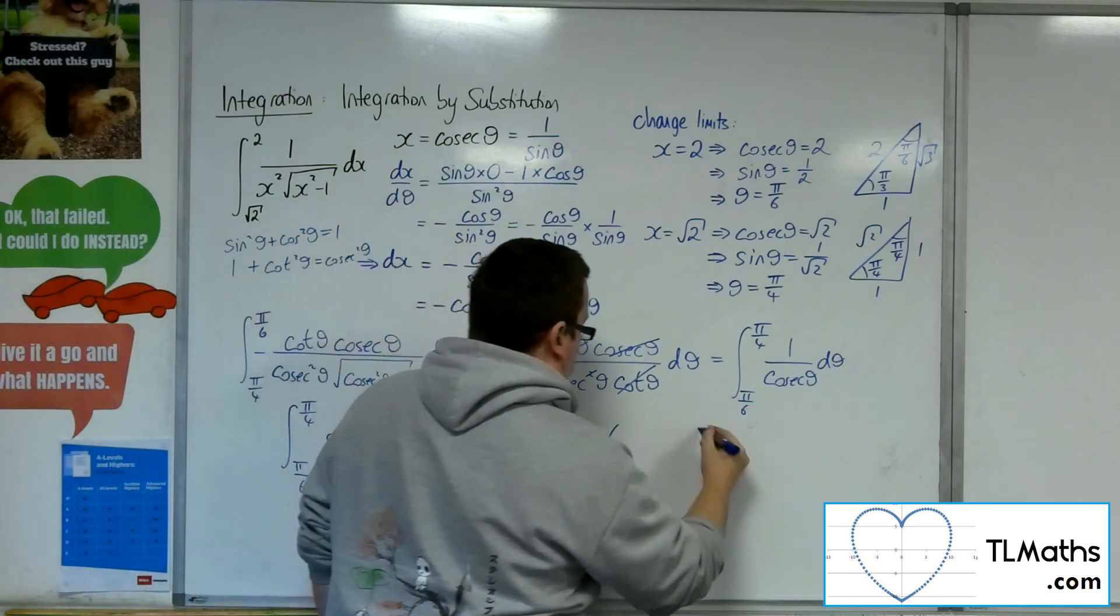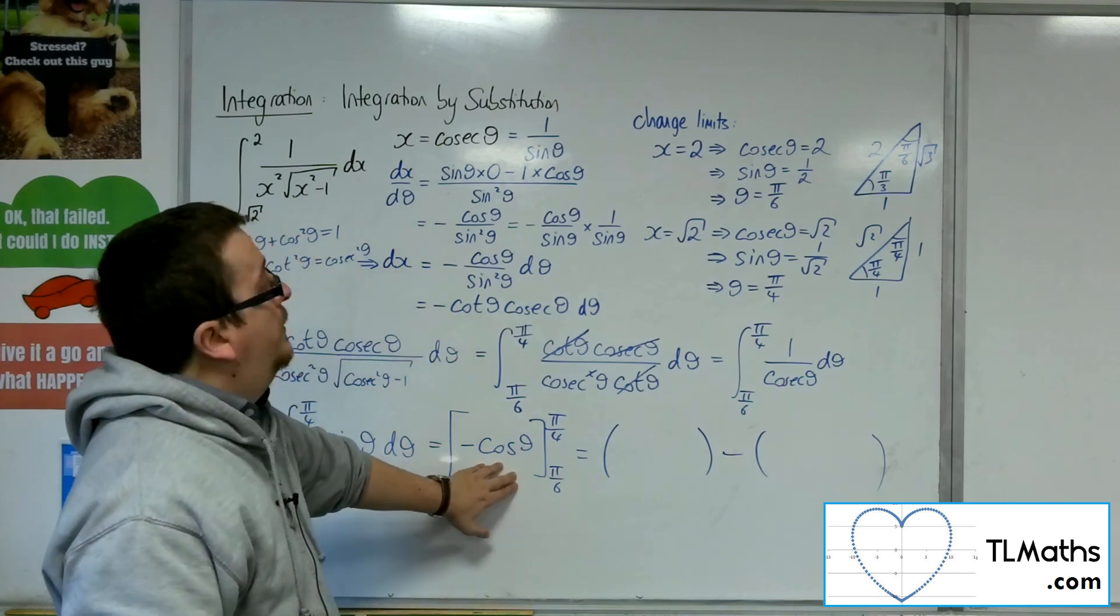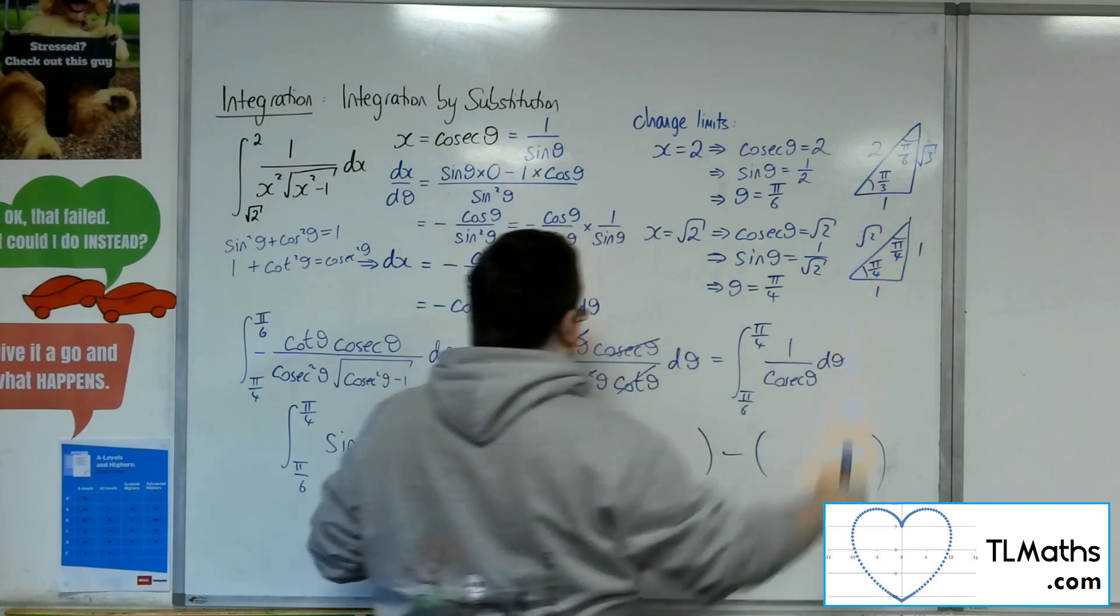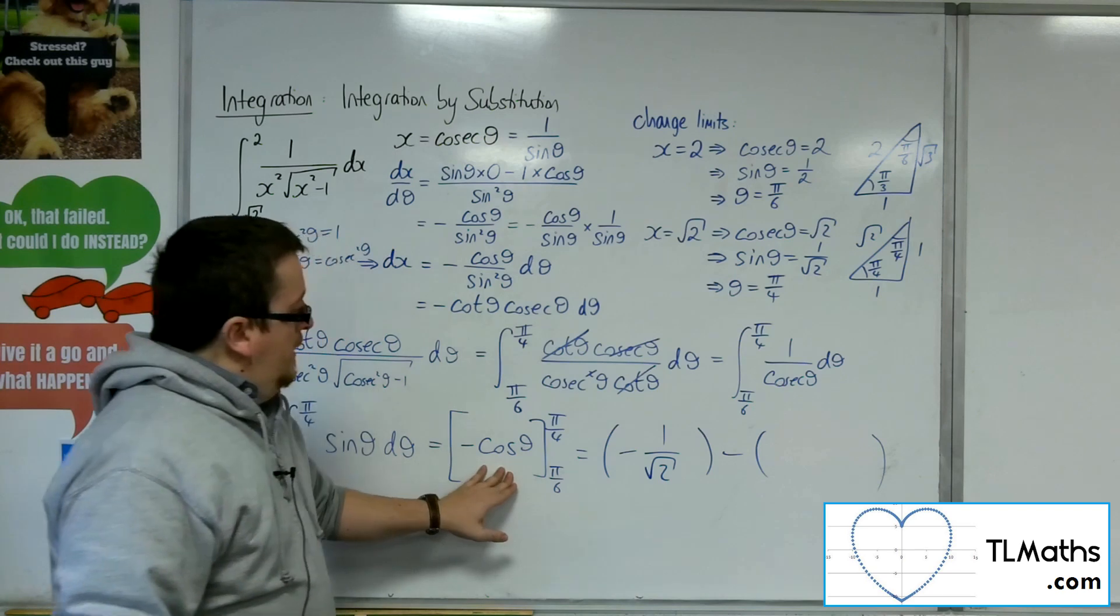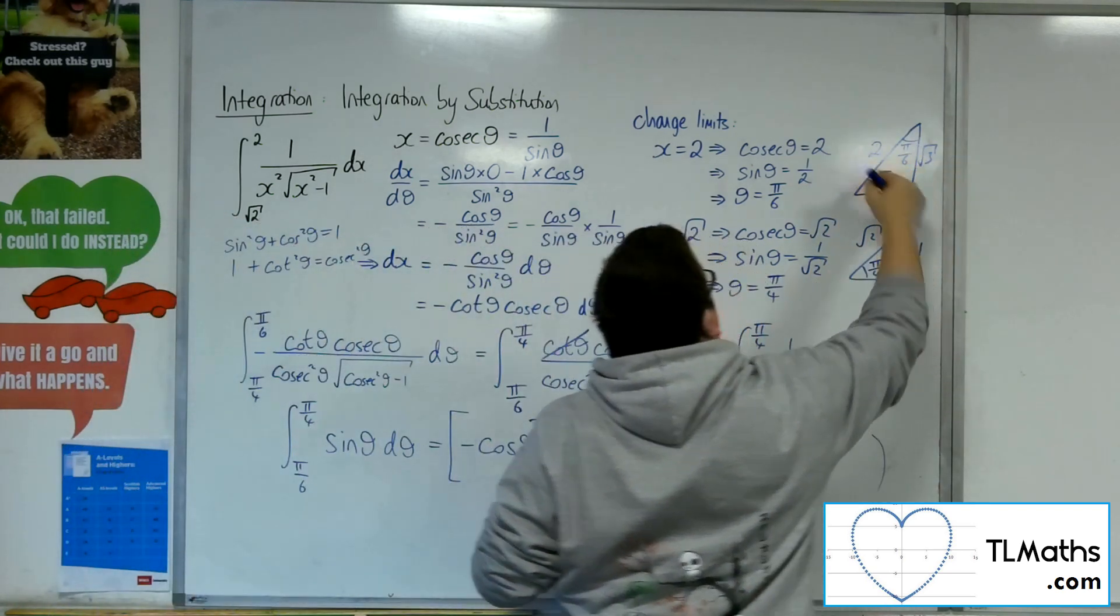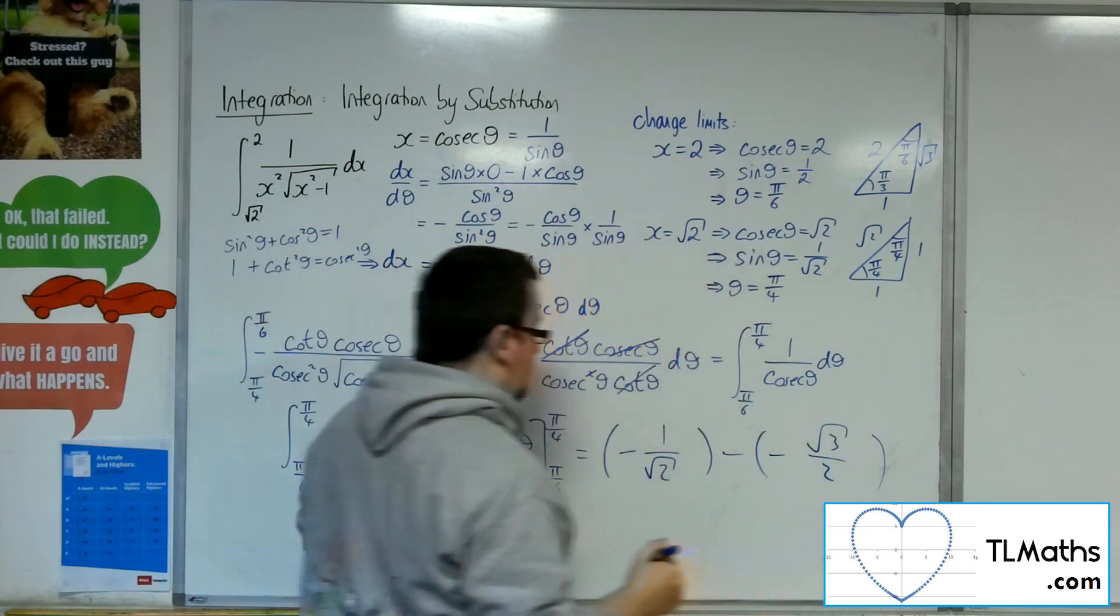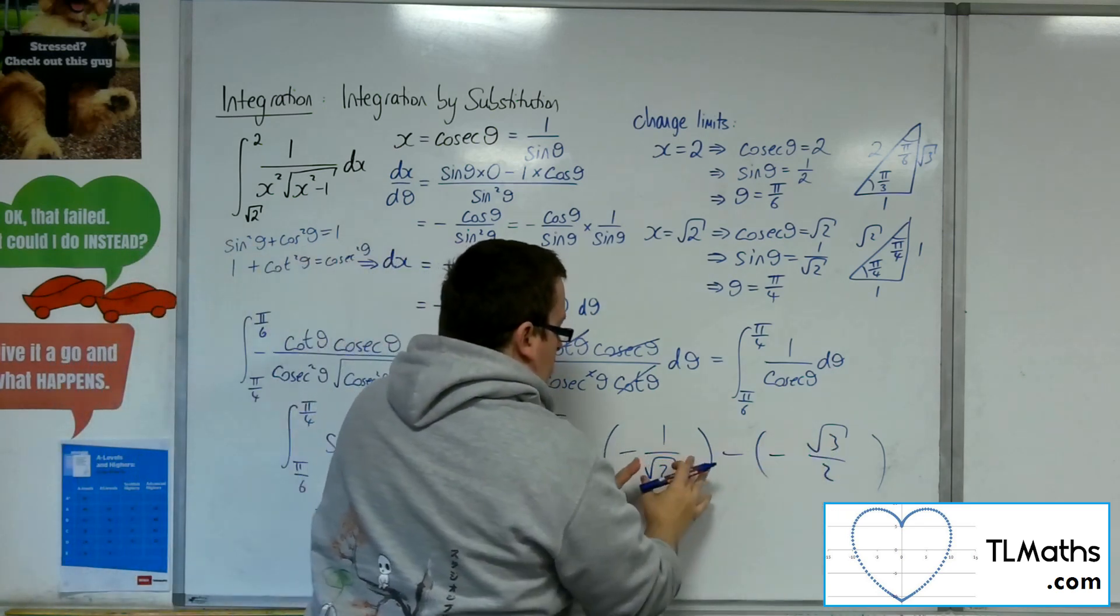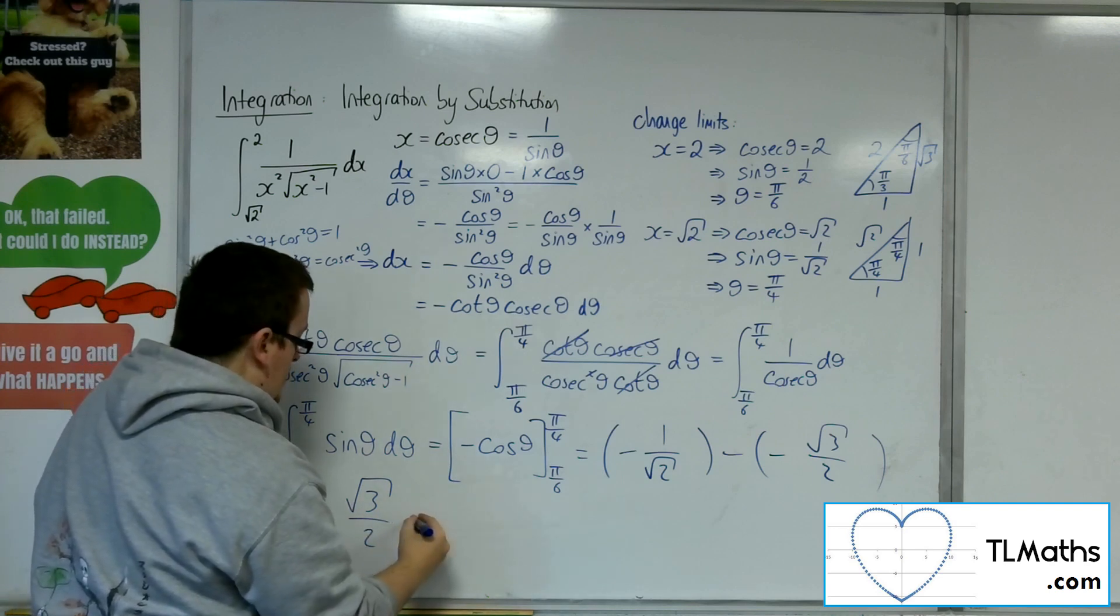So now if I substitute in the pi over 4 into this. Now cosine of pi over 4 is adjacent over hypotenuse. So 1 over root 2. So that would be minus 1 over root 2. Then substitute in the pi over 6. So adjacent over hypotenuse. So that's root 3 over 2. So minus root 3 over 2. So I've got plus root 3 over 2 take away 1 over root 2.